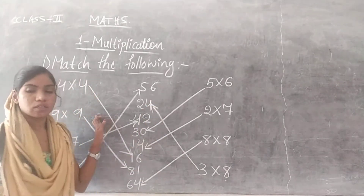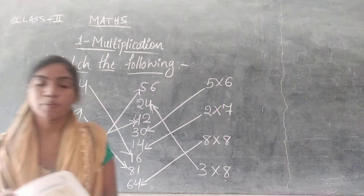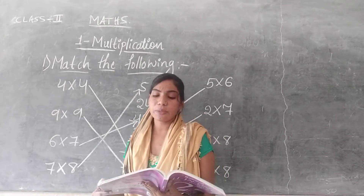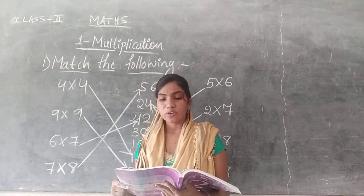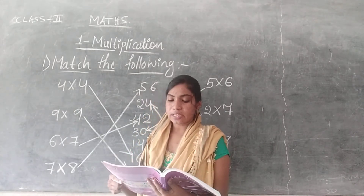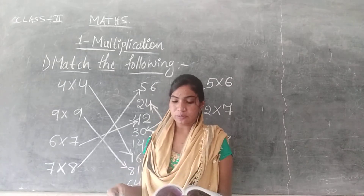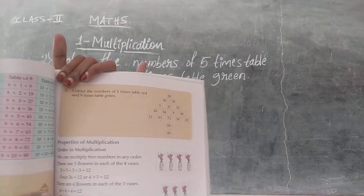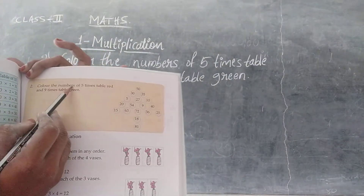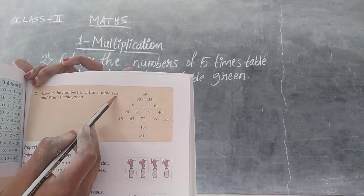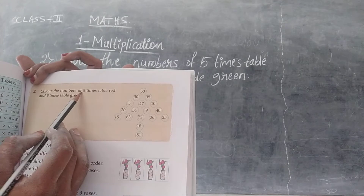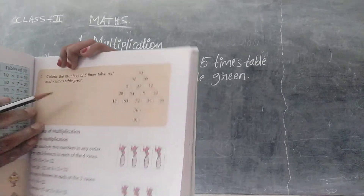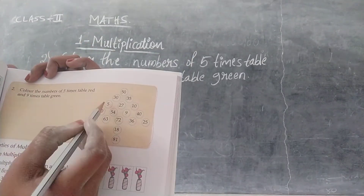Write this to your textbook and come to the next one. Page number 163: colour the numbers of the 5 times table red and the 9 times table green. Now first read the 5 times table.